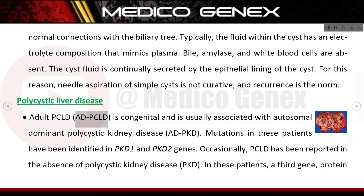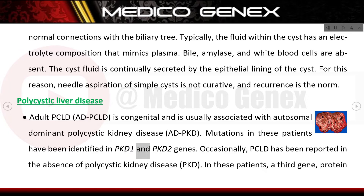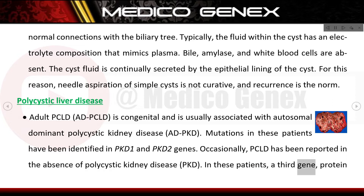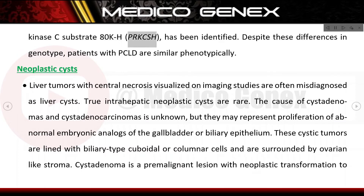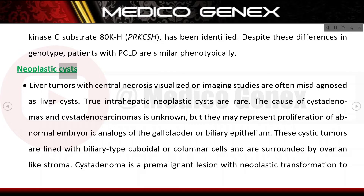Polycystic liver disease (PCLD): PCLD is congenital and is usually associated with autosomal dominant polycystic kidney disease (ADPKD). Mutations in these patients have been identified in the PKD1 and PKD2 genes. Occasionally PCLD has been reported in the absence of polycystic kidney disease; in these patients a third gene, protein kinase C substrate PRKCSH, has been identified. Despite these differences in genotype, patients with PCLD are similar phenotypically.